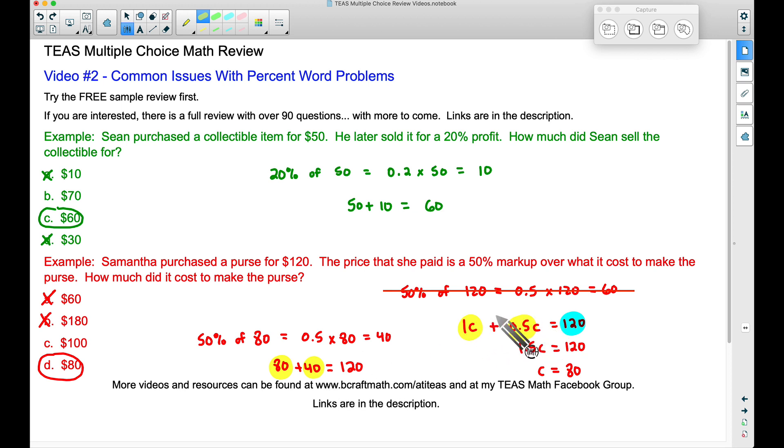And when we take the 80 and the 40, just like over here, this 1C and this 0.5C, when we add these together, or when we add these together, notice we're getting the 120.